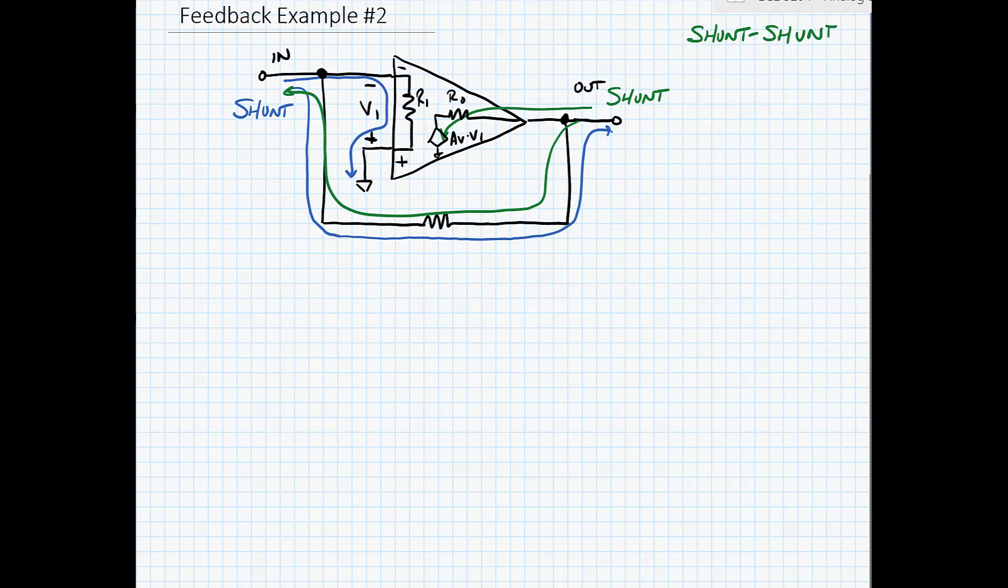This is a current at the input voltage at the output or a trans-resistance amplifier. And this means that we're going to use Y parameters for our feedback network.